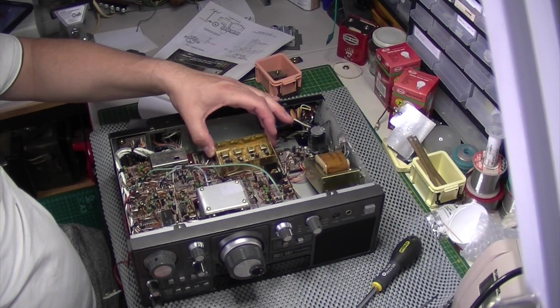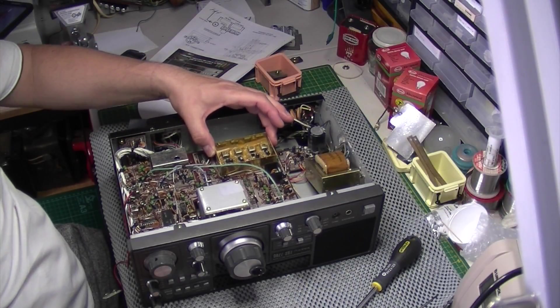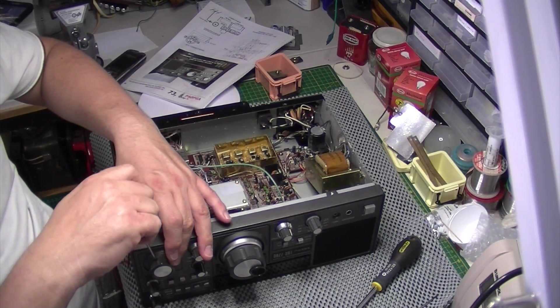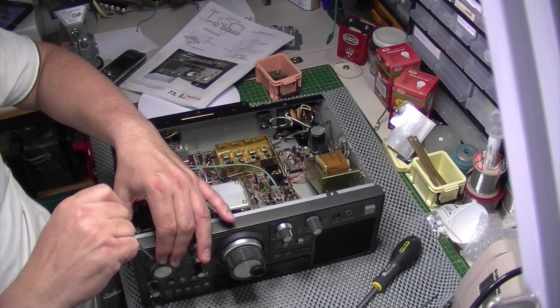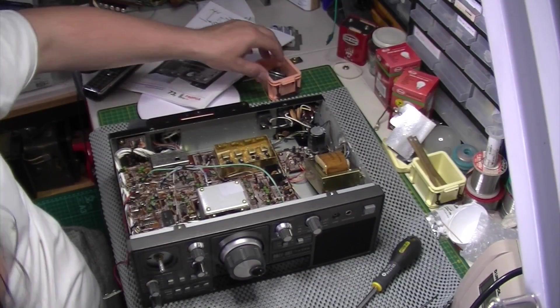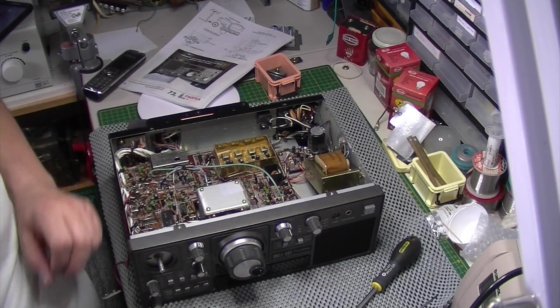OK there's eight screws there that hold the board in so that's now loose. I've got to disconnect and remove the band selector switch. The knob anyway. Just loosen that and it pops out. We've got a retaining nut there.